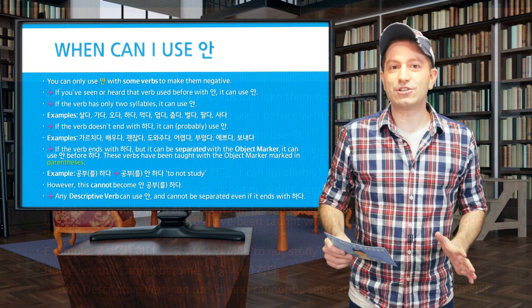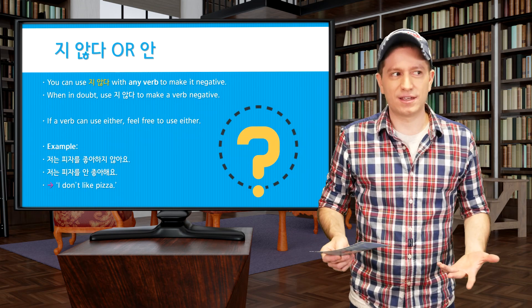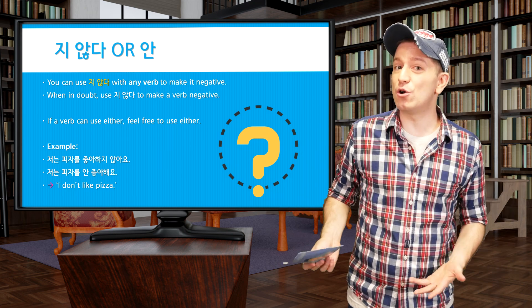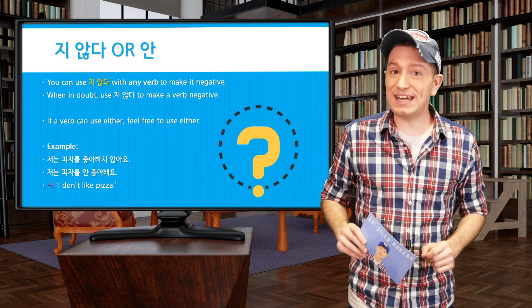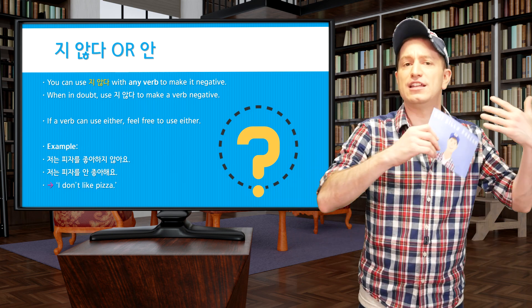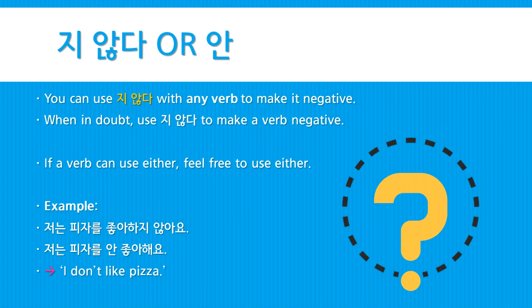So we've learned about 지 않다 as well as 안. What if a verb can use both? You can use either. Feel free to use 지 않다 or 안 if you know a verb can use one or the other. But when in doubt, just use the ending 지 않다. For example, you could say 저는 피자를 좋아하지 않아요 — I don't like pizza. Or you could say 저는 피자를 안 좋아해요. Either is fine.